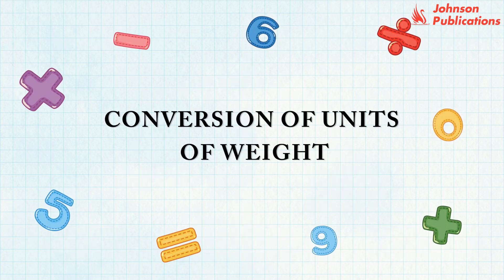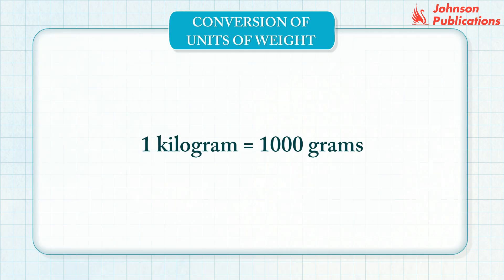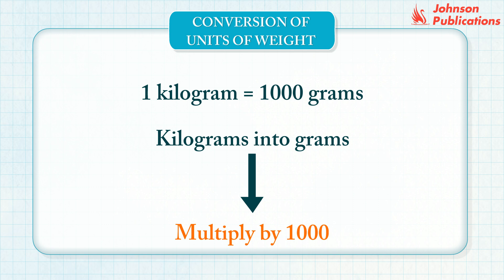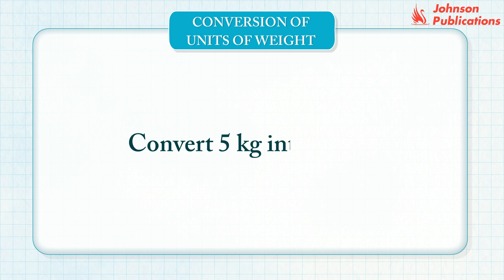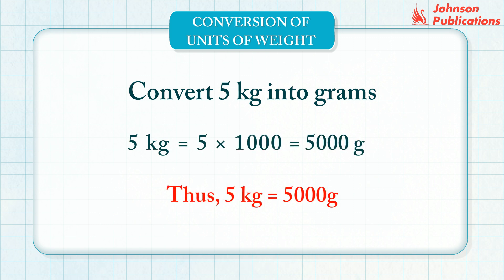Conversion of units of weight. 1 kilogram is equal to 1,000 grams. To convert kilograms into grams, multiply the kilograms by 1,000. Let us convert 5 kilograms into grams. Multiply 5 kilograms by 1,000. Thus, 5 kilograms equals 5,000 grams.